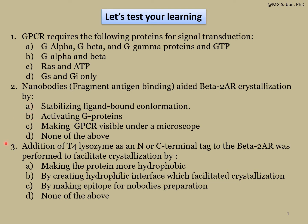Question number three: addition of T4 lysozyme as an N or C terminal tag to the beta-2 adrenergic receptor was performed to facilitate crystallization by — option A: making the protein more hydrophobic. This is not correct because membrane proteins are usually hydrophobic, and for crystallization the protein needs to be soluble and the solvent must allow protein molecules to come together and organize into a crystal, so making it more hydrophobic does not help.